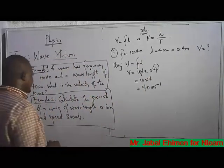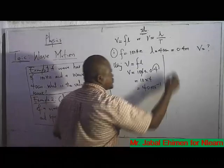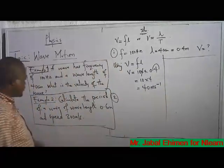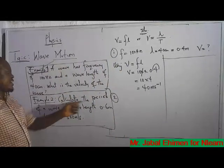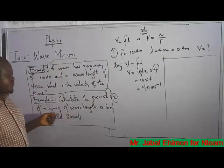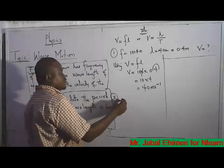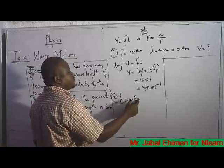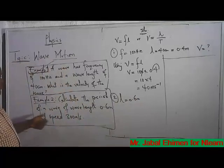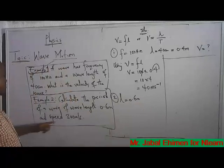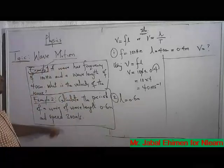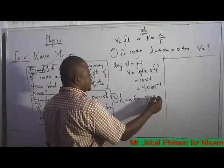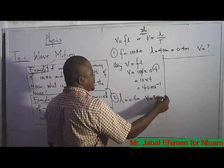The next question — question 2 — says: calculate the period of a wave of wavelength 0.6 meters. We don't need to convert because it's already in meters. The speed is given as 300 meters per second, and they're asking us to find the period.